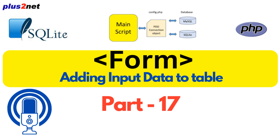So thanks to validation, we've got good, clean data. But where does it actually go? That's where our database comes in. This example uses something called SQLite. I've heard of databases, but SQLite is a new one for me.